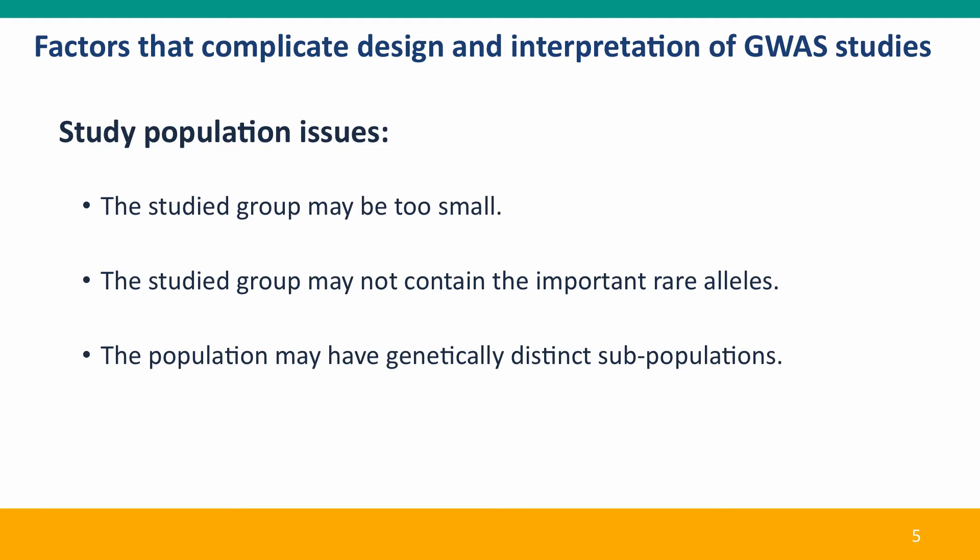Population issues are really important. The studied group may be too small. We saw in the height study that researchers said maybe if we studied larger populations — hundreds of thousands of people — we could find more alleles. If the studied group is small, which can matter if the phenotype is relatively rare, that limits the power of the study to find the alleles. The SNP study group might not even contain the important rare alleles. Furthermore, the population may have genetically distinct subpopulations in which different alleles are connected to different aspects of the phenotype — true both for the larger population and for the specific subpopulation used in the study.